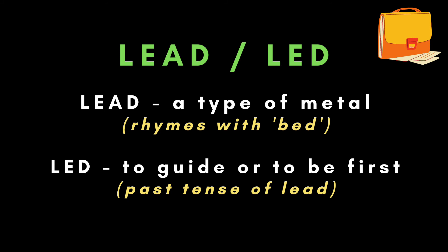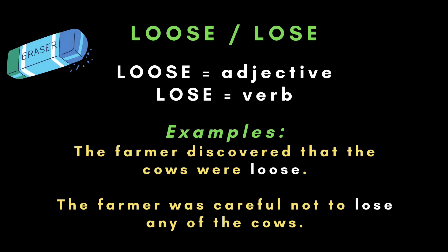"Lead" and "led." "Lead," when it rhymes with "bed," refers to a type of metal. "Led" is the past tense of the verb "lead," which means to guide or to be first. Next: "loose" and "lose." "Loose" is usually an adjective, while "lose" is always a verb. For example: "The farmer discovered that the cows were loose." "The farmer was careful not to lose any of the cows."